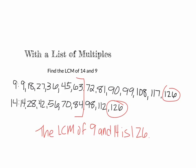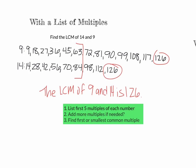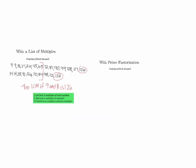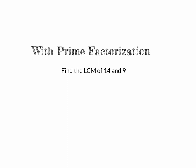To summarize the list method: list the first five multiples of each number, add more multiples if needed, and look for the first or smallest common multiple. When finding the least common multiple, you want the first or smallest one — there's no need to keep looking once you've found it. This is different from greatest common factor, where you wanted the biggest.